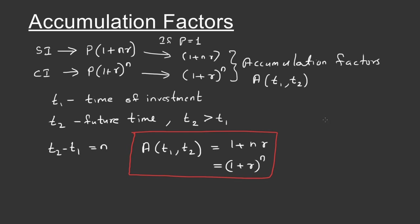The accumulated amount at period n for principal P will be simply P multiplied by the accumulation factor, because for a principal of 1 it equals the accumulation factor, so for P it will be P times the accumulation factor. If we know the accumulation factor, we can easily find the accumulated amount at time T2. For examination purposes, a table is usually provided giving the accumulation factor for different interest cases and periods. You can look up those values and multiply by the principal to get the accumulated amount at T2 for an investment at T1.